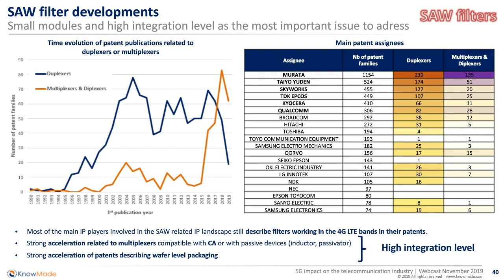This trend is driven by all main IP and market players such as Murata, TaiyoYuden, Skyworks, Qsara, and Qualcomm. Another related trend not shown here is a strong patenting activity related to wafer-level packaging. Five years ago most patents described standard packaging, but today most patents describe wafer-level packaging as the preferred package. This is very well suited for very dense modules with many filters and a small footprint — a key requirement for 5G filtering modules, which must be complex but remain small.